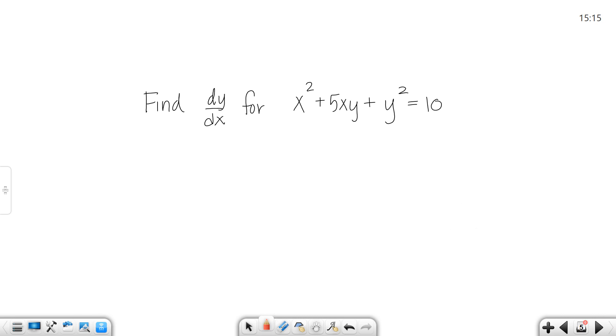The derivative of x squared would be 2x. Let's skip this part for a moment. And the derivative of y squared would be 2y dy/dx. And the derivative of 10 would be 0 since it's a constant.